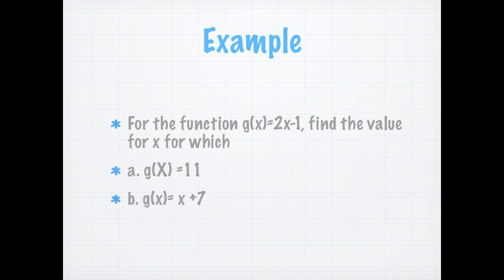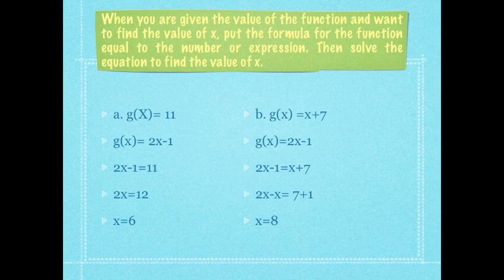For the function g of x equals to 2x minus 1, find the value of x for which g of x equals to 11, and g of x equals to x plus 7. When you're given the value of the function and want to find the value of x, put the formula for the function equal to the number or expression, then solve the equation to find the value of x.